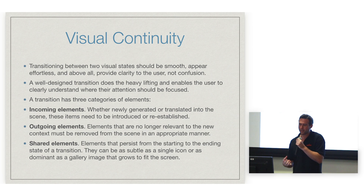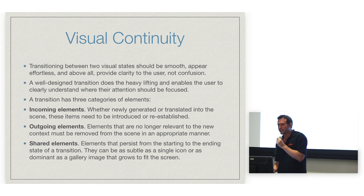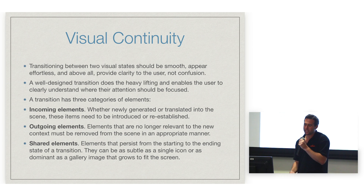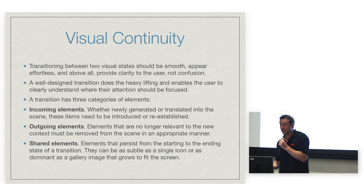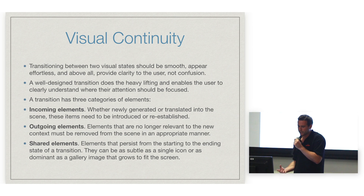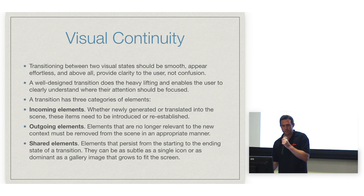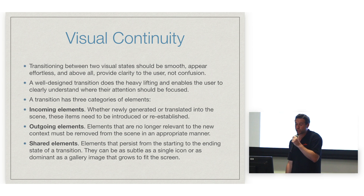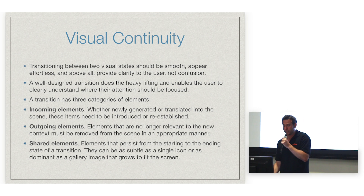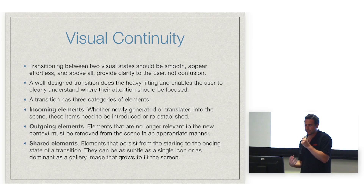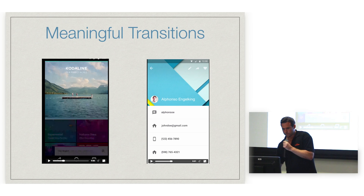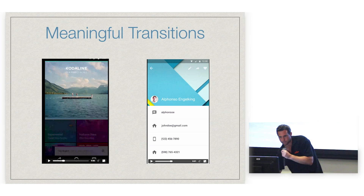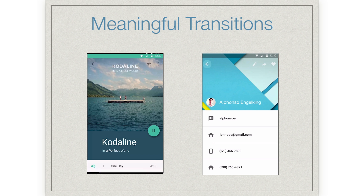A well-designed transition does the heavy lifting and enables a user to clearly understand where their attention should be focused. A transition has three categories of elements. Incoming elements — whether newly generated or translated into the scene, these items need to be introduced or reestablished. Outgoing elements — elements that are no longer relevant to the new context must be removed from the scene in an appropriate manner. And shared elements — elements that persist from the starting to the ending state of a transition. They can be as subtle as a single icon or as dominant as a gallery image that grows to fill the screen. And to show you what they call meaningful transitions...